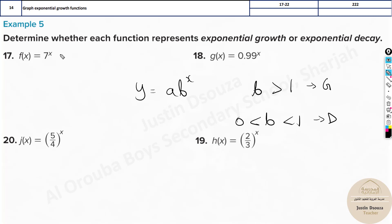That's it. Now here you can see 7 is greater than 1, 5 by 4 is 1.25 greater than 1. These are growth functions. 2 by thirds is 0.666. It's a decay function because it's less than 1 but it is greater than 0. It must be greater than 0.